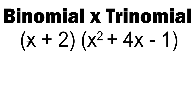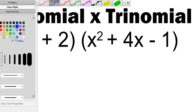So first of all, a binomial is something with two terms. You can see I've got an example here, x plus 2. And a trinomial is something that has three terms. So you can see an example here, I have x squared plus 4x minus 1.